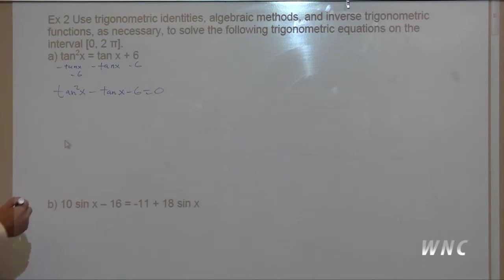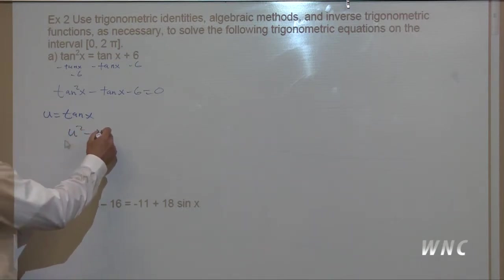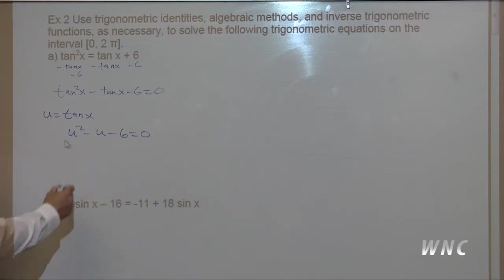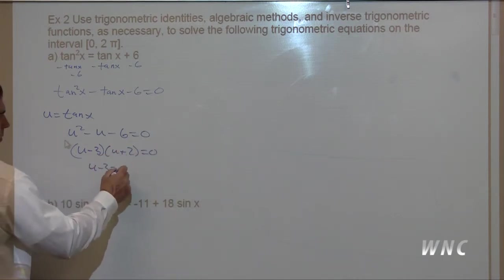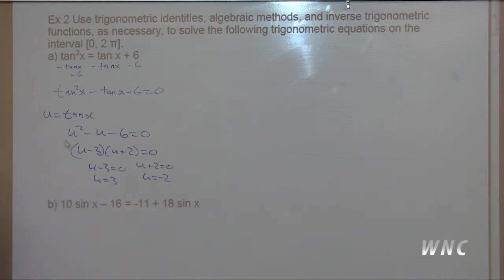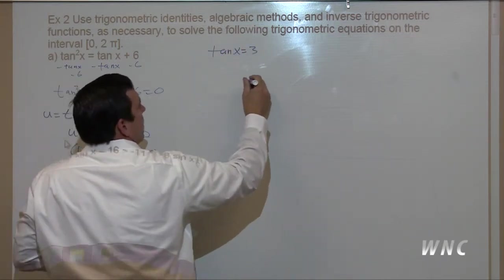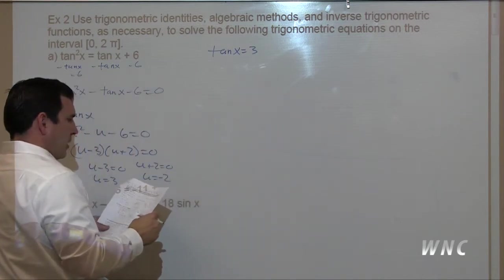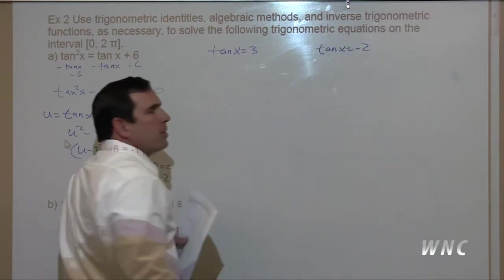With substitution u equals tangent x, we have u squared minus u minus six equals zero. That factors to u minus three times u plus two equals zero, so u equals three or u equals negative two. Therefore tangent of x equals three and tangent of x equals negative two. This one is going to require a calculator.